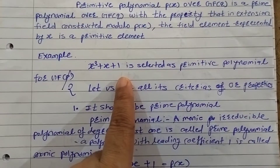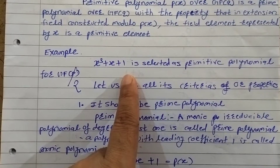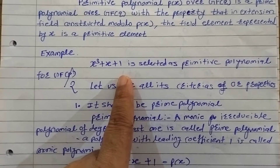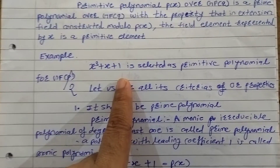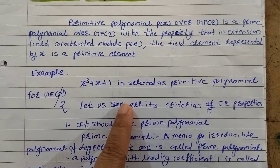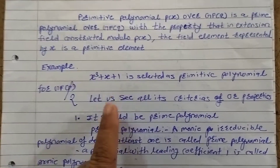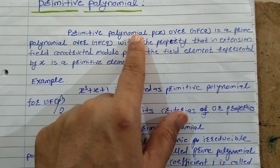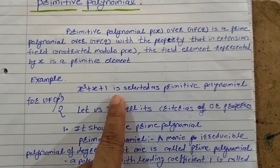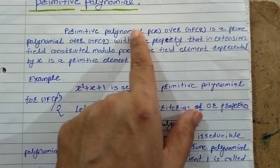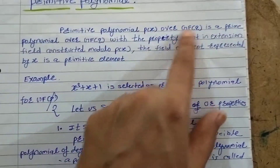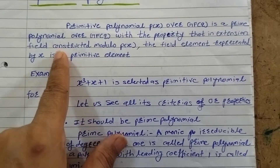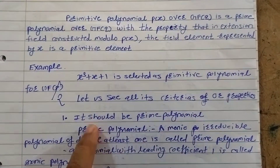Galois field 2 means there are only two elements: 0 and 1 — no other numbers exist. So we take x³ + x + 1 as our primitive polynomial over GF(2). The first condition is that it must be a prime polynomial, so let us check whether x³ + x + 1 is a prime polynomial over GF(2).